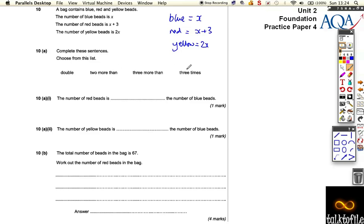So we've got to choose sentences from this list to help us complete the sentence. The number of red beads is, well, red is 3 more, it's plus 3, isn't it? So it's 3 more than the number of blue beads. So we've done that one.